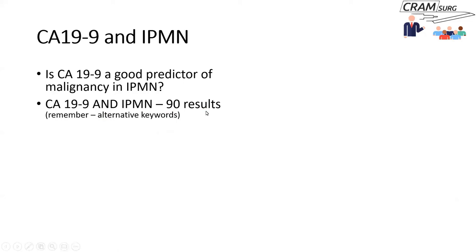Keep in mind that concepts like CA-19-9 and IPMN might have alternative keywords — CA-19-9 might be referred to as carbohydrate antigen 19-9 or Sialyl Lewis antigen A, and so on. IPMN may go by many different terms. You've got to keep those in mind and use alternative keywords or use controlled vocabulary and MeSH headings, as we touched on last time.